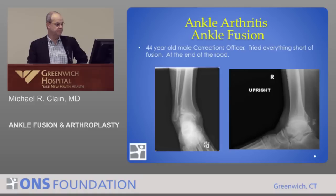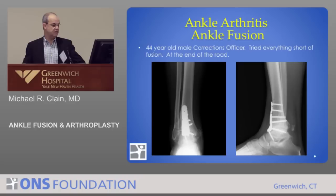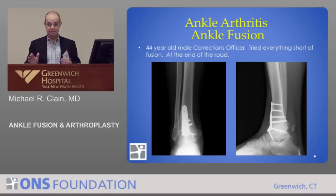Here's another patient — these are young patients. A 44-year-old corrections officer who tried absolutely everything. You can see he's got a lot of deformity — the ankle is very tilted with absolutely no joint space. He's also a little arthritic in the subtalar joint, which is concerning long term. I used a different technique with a plate and screws, which made it extremely strong. I did it open because with that amount of deformity I couldn't get him into the correct position arthroscopically — and getting the position right is the most important thing. There's no point fusing someone in a bad position.